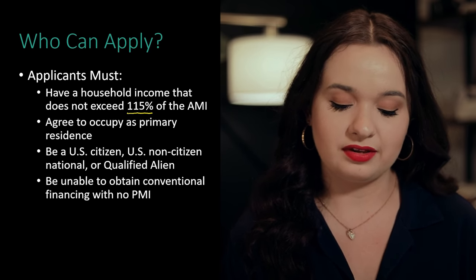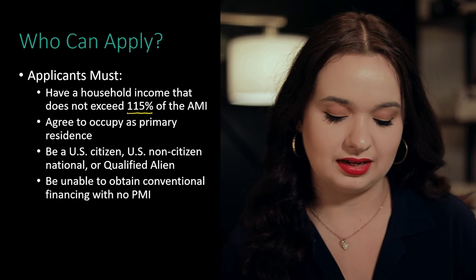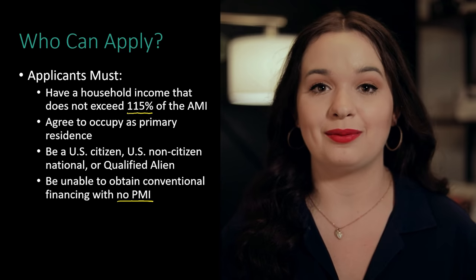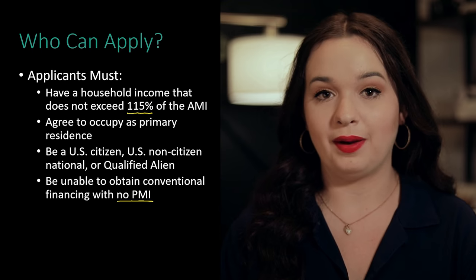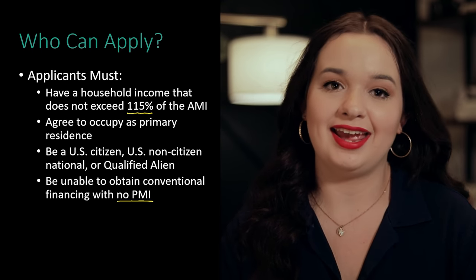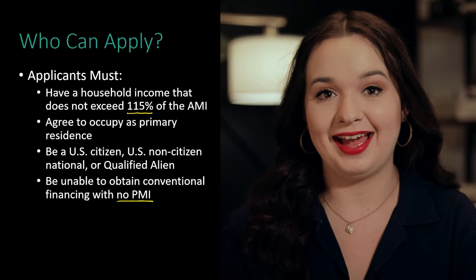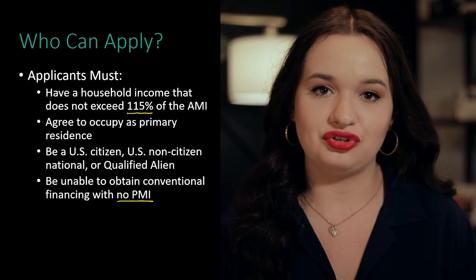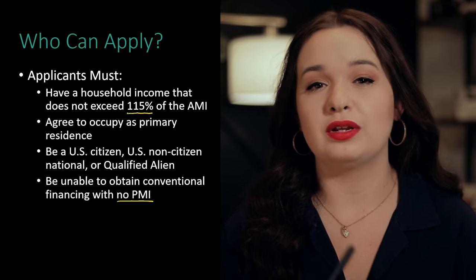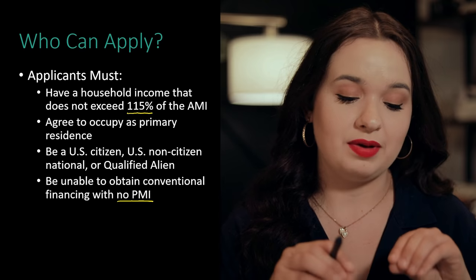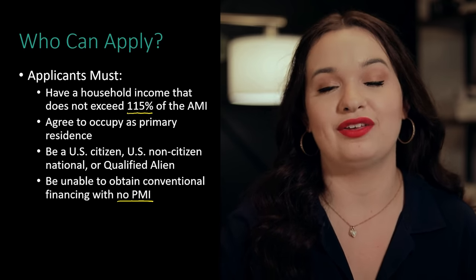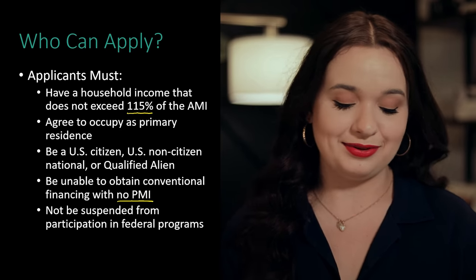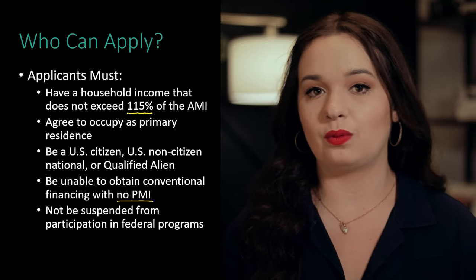Now this is another big one. You must prove that you are unable to obtain conventional financing with no PMI. When the lender is looking at your bank statements and they see that you have a savings account with a lot of money that would cover about 20% of a down payment for the house you're trying to buy, they could actually say you're not eligible for this rural development loan because you have that cash in your bank account. Because this rural development loan specifically caters to low and moderate income earners, they typically try to make this program only available for people who have a hard time coming up with that 20%. Another criteria is that you must not be suspended from participation in federal programs in order to qualify.